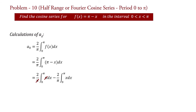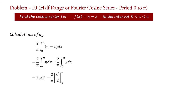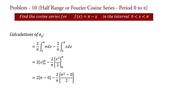The pi's cancel, therefore a₀ equal to 2 into integration of dx, that is x with limit 0 to pi, minus 2 upon pi into integration of x, that is x² upon 2 with limit 0 to pi. Putting the limits: a₀ equal to 2 into (pi minus 0) minus 2 upon pi into (pi² minus 0) upon 2. The 2's and one pi cancel, giving a₀ equal to 2pi minus pi, which equals pi.